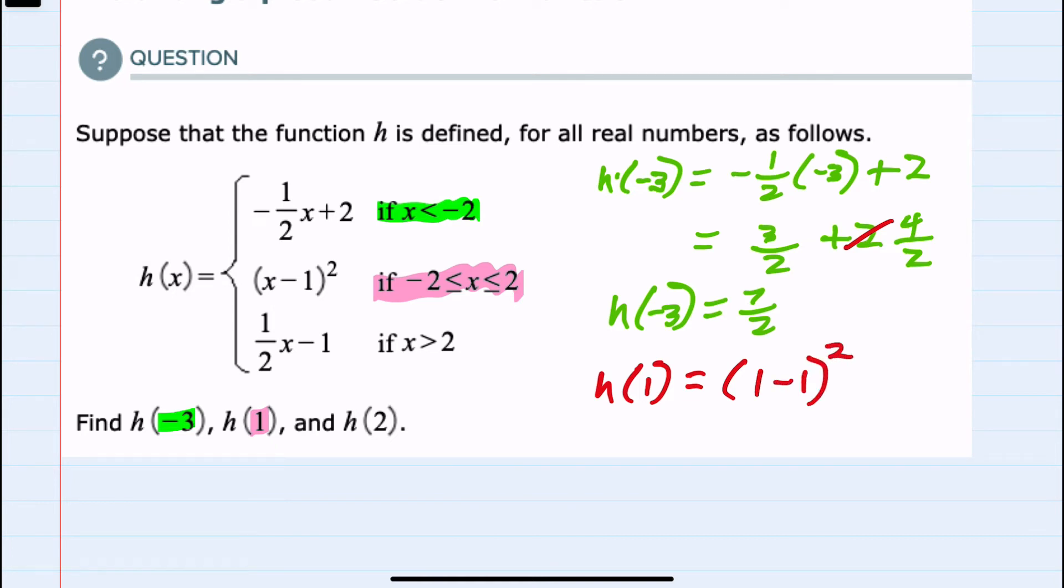Replacing x with 1 would give us 1 minus 1 quantity squared. Working inside the parentheses first, 1 minus 1 is 0 squared. So h of 1 is 0, substituting into that piece.